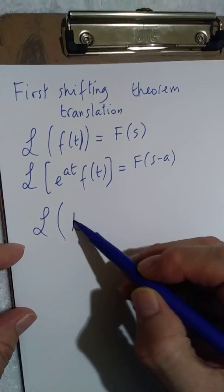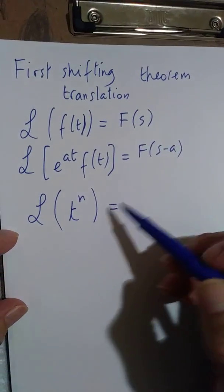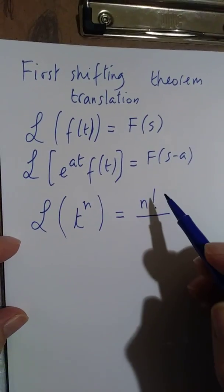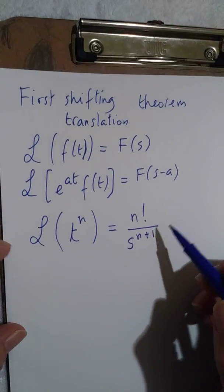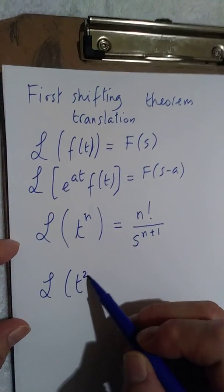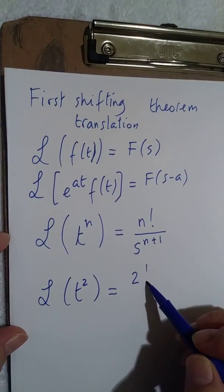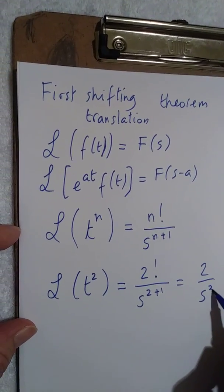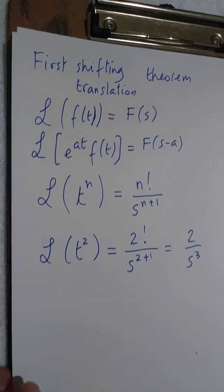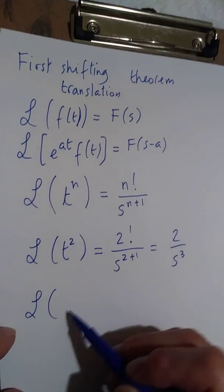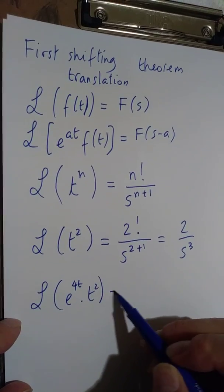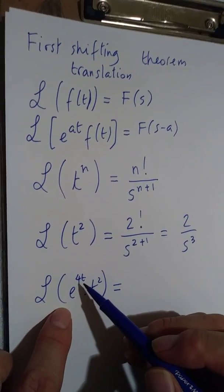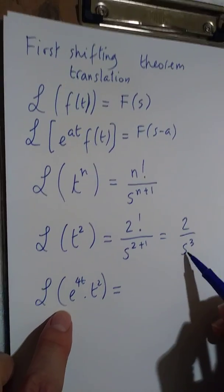Here's an example. The transform of t^n, where n is a positive integer, is n factorial over s^(n+1). So the transform of t² is 2 factorial divided by s^(2+1), which is 2 over s³. The transform of e^(4t)·t² can be obtained by shifting this transform down by 4.